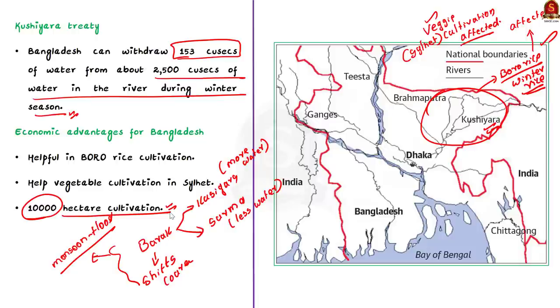Here, cusec — or cusecs — is the unit of measurement of flow of water. It means cubic feet per second. This is the economic importance of the Kushiyara River Treaty.